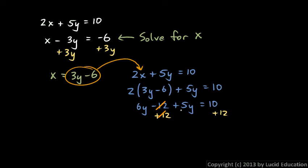And here on the left, we have 6y plus 5y. That's 11y. And on the right, we have 22. 11y is 22, so you can see that y is equal to 2.